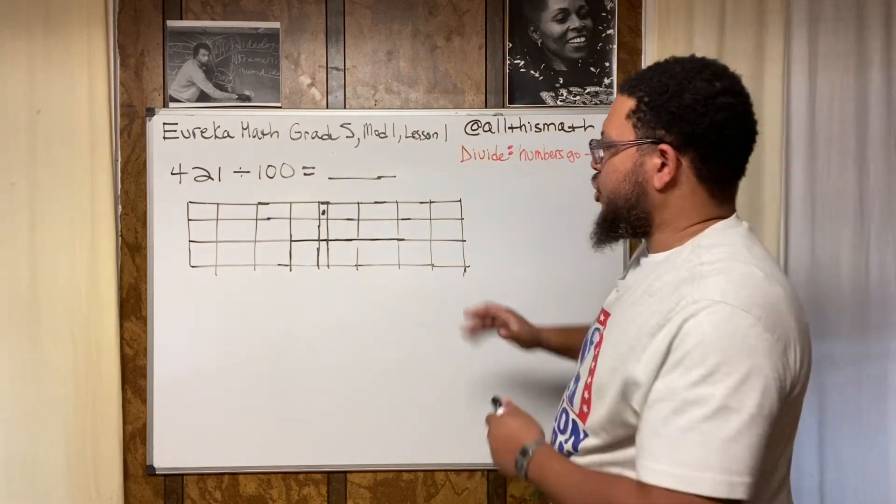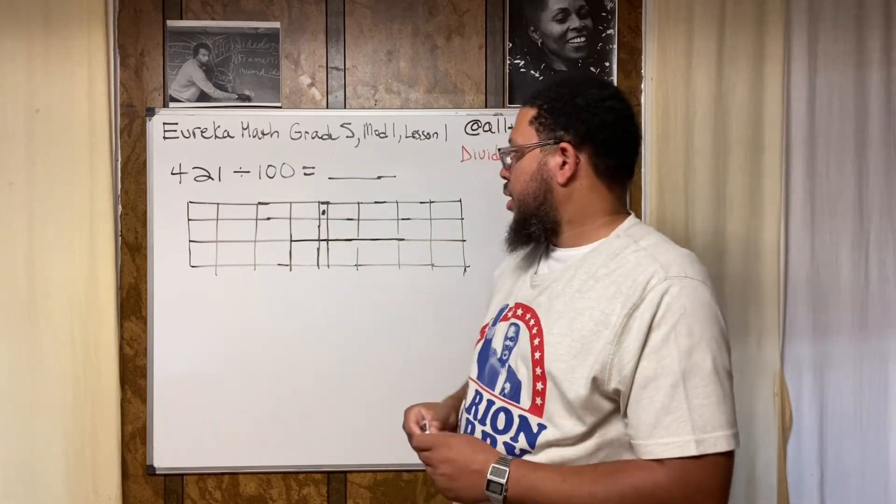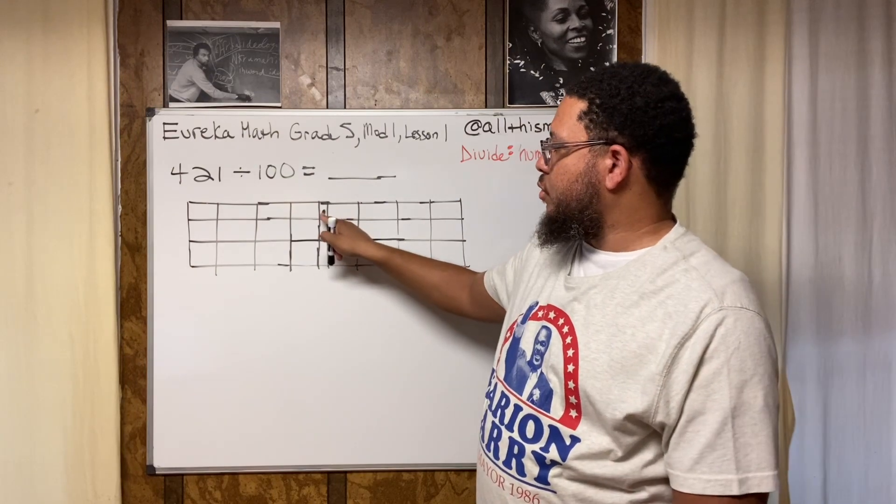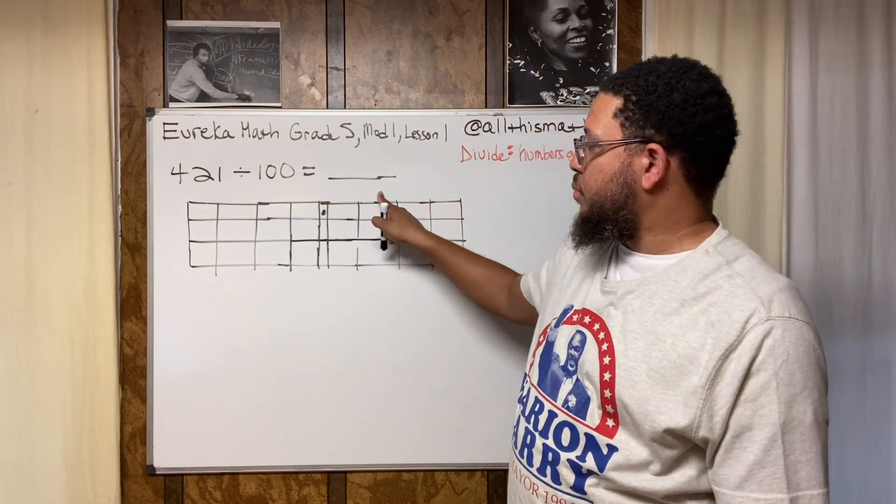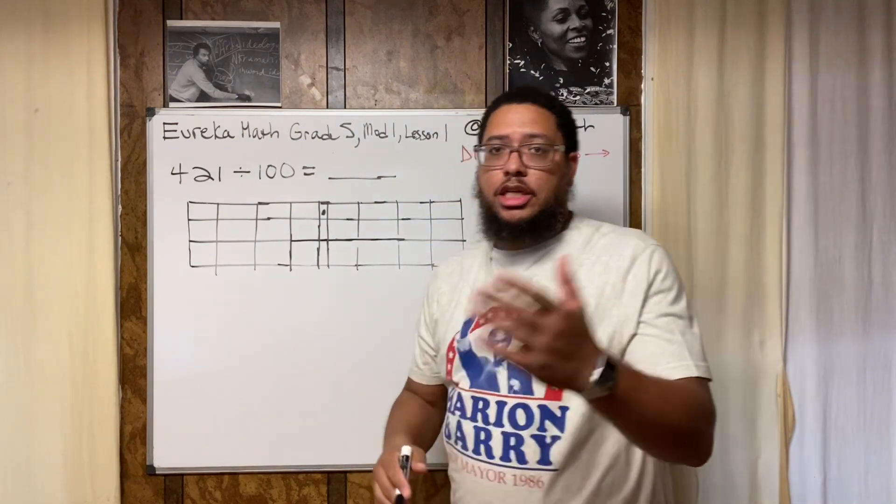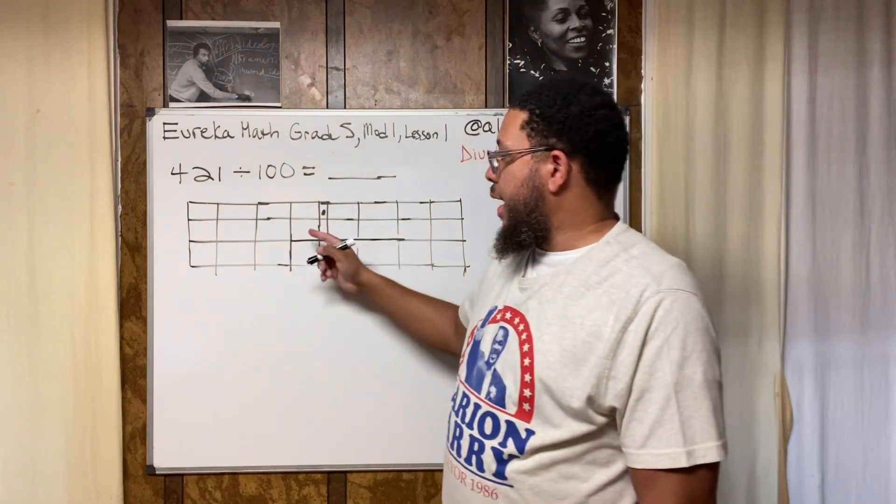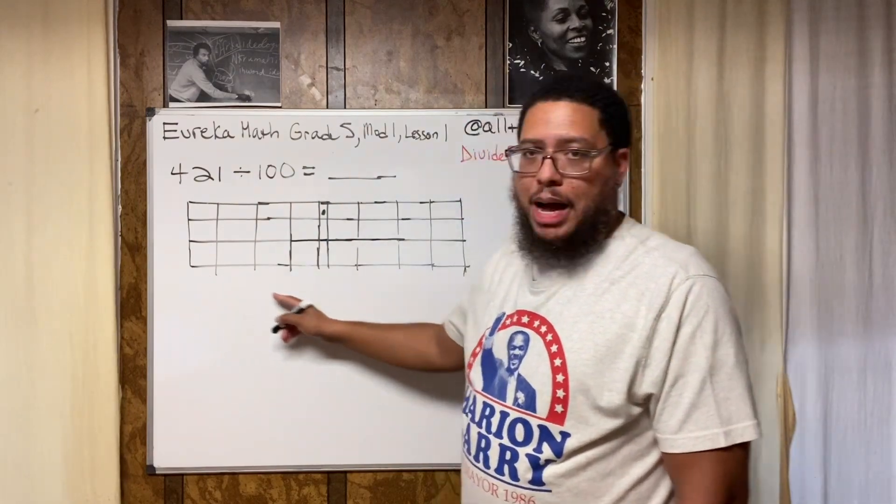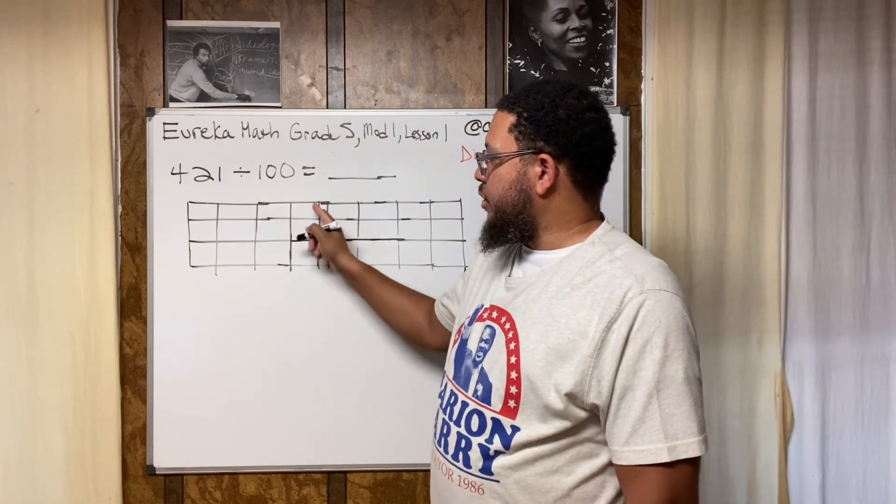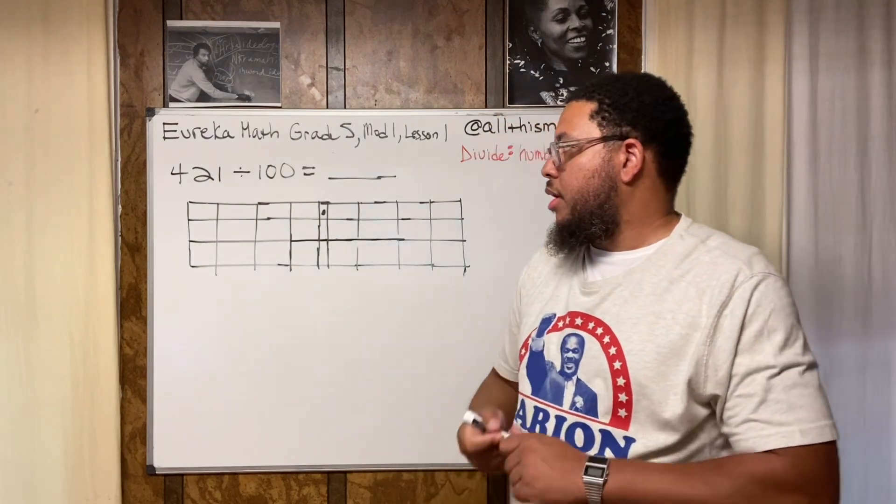First let's use this place value chart and write the original number. The original factor is 421, so each column represents a different place value. This is the decimal point, so that means this is the tenths place, hundredths place, thousandths place, ten thousandths place. What I suggest for you to do is copy this down, label the place values. To the left of the decimal point you got the ones place, the tens place, the hundreds place, the thousands place.